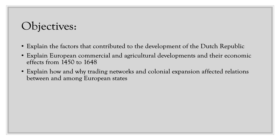Of the three objectives, the first one is really the most important: to explain the factors that contributed to the development of the Dutch Republic. This period of history we're looking at — Netherlands in the 1700s — they were known as the Dutch Republic. We're also going to talk about commercial and agricultural developments and how the Dutch participated in international trade networks and colonial expansion, which we touched upon in Unit 1 during the Age of Exploration.